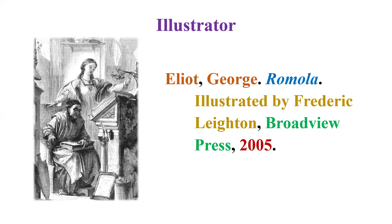For a work with an illustrator, follow the same method: Eliot, George. Romola. Illustrated by Frederic Leighton, Broadview Press, 2005. Notice that 'Broadview Press' is not shortened to 'P' because it is an individual commercial publisher, not a university press. The same 'role' pattern — translated by, edited by, illustrated by — is used throughout.